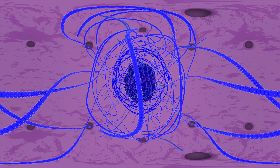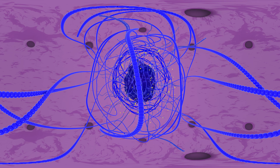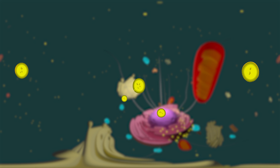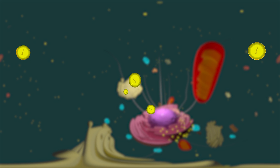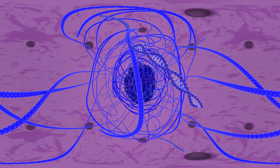The nucleus is the control center of a cell. The nucleus also contains a nucleolus, which is a structure where ribosomes are made. After ribosomes leave the nucleus, they have the important job of synthesizing, or making, proteins. Outside the nucleus, the ribosomes and the rest of the organelles float around in the cytoplasm, which is the jelly-like substance.